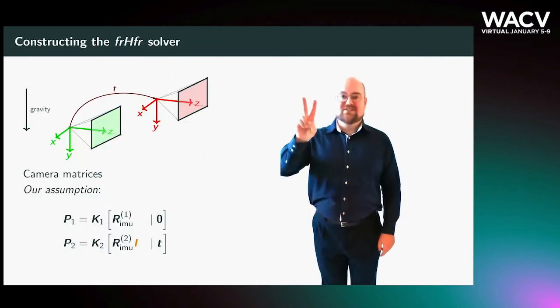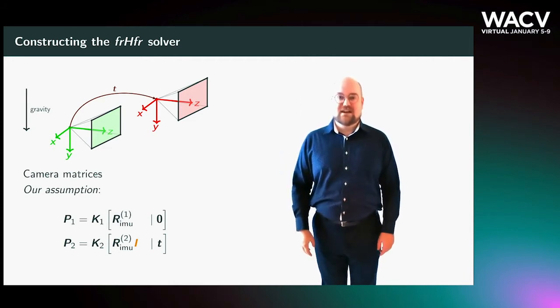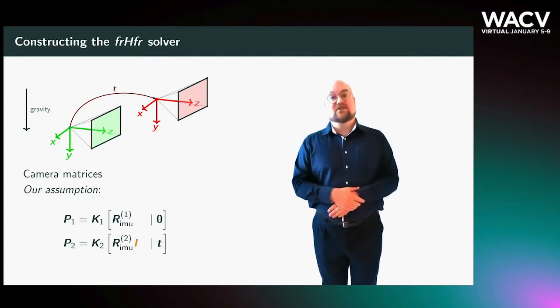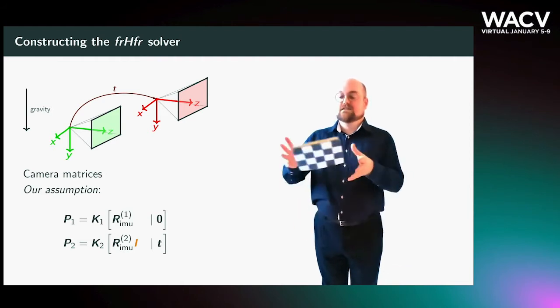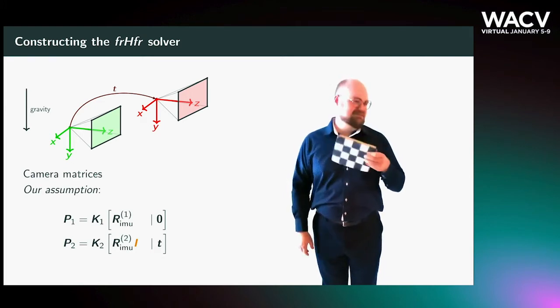We construct two solvers treating partially calibrated cases. The first, with unknown focal length, and the second, with unknown focal length and radial distortion profile. The latter case is, to the best of our knowledge, the very first solver to treat the case of jointly estimating motion parameters, as well as focal length and lens distortion, while incorporating the IMU data. This is a highly relevant case for anyone who wishes to circumvent tedious calibration procedures.